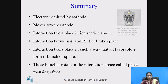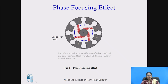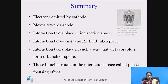In summary: electrons are emitted by the cathode and move towards the anode. The interaction between the electron and the RF field takes place in the interaction space. All favorable electrons form electron bunches or spokes, which rotate in the interaction space — this is called the phase focusing effect. By this method, the magnetron oscillates and works as an oscillator. The basic application of the magnetron is in microwave ovens, where it is very useful as a microwave source.